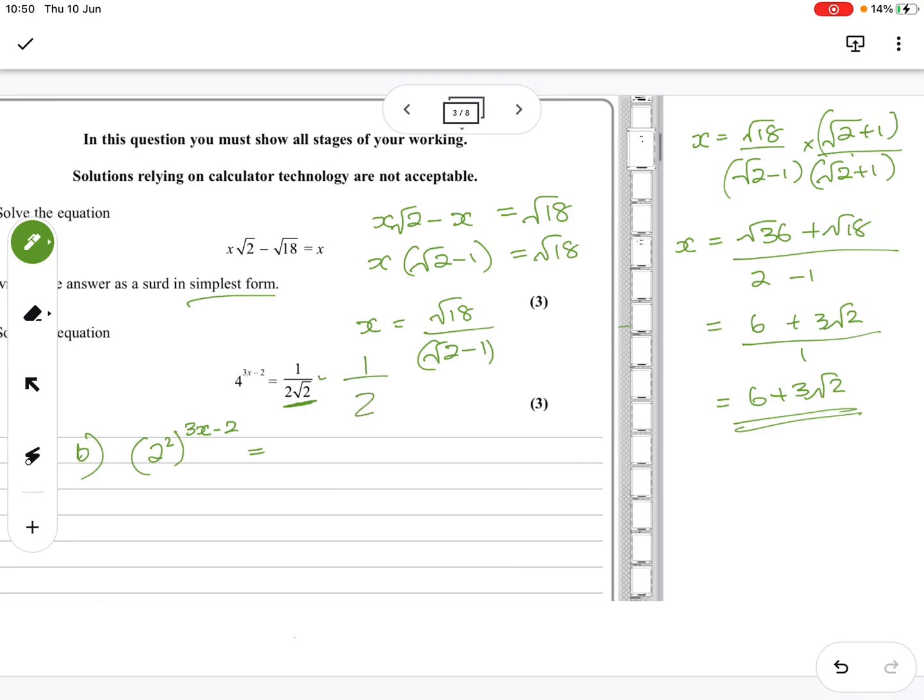That's 1 over 2 to the power what? So 2 times 2 to the half. So you've got 2 to the 1 times 2 to the half, which means you've got 1 over 2 to the 3 over 2, because you're going to add them. 1 plus 1 half is 1 and 1 half or 3 over 2. And then you bring it to the top, so it becomes minus 3 over 2.